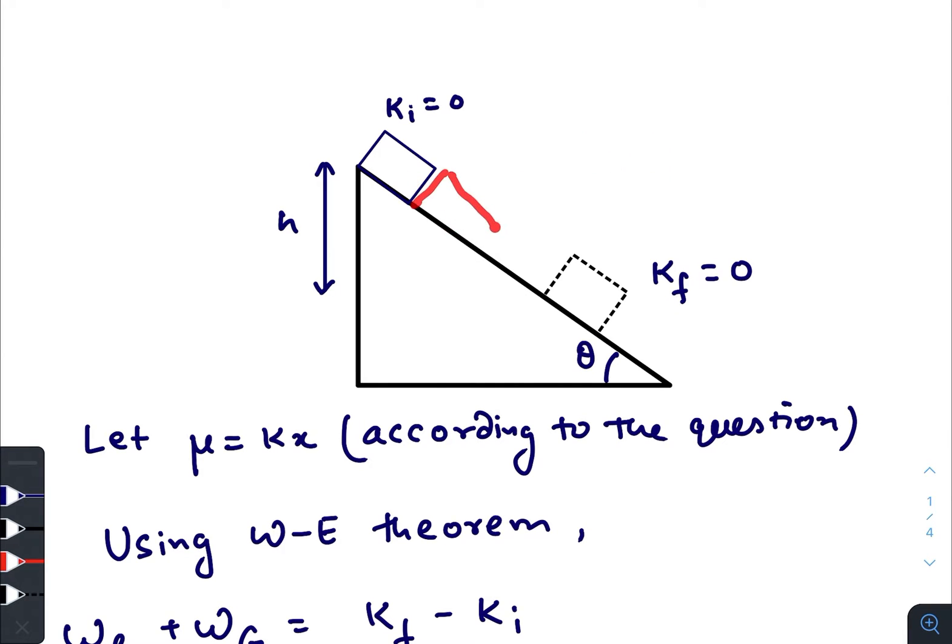As the block moves downwards the frictional force comes into action. The frictional force increases but the downward force mg sin theta remains constant. So initially the speed of the block is increasing and it increases to a maximum value until and unless the force due to friction